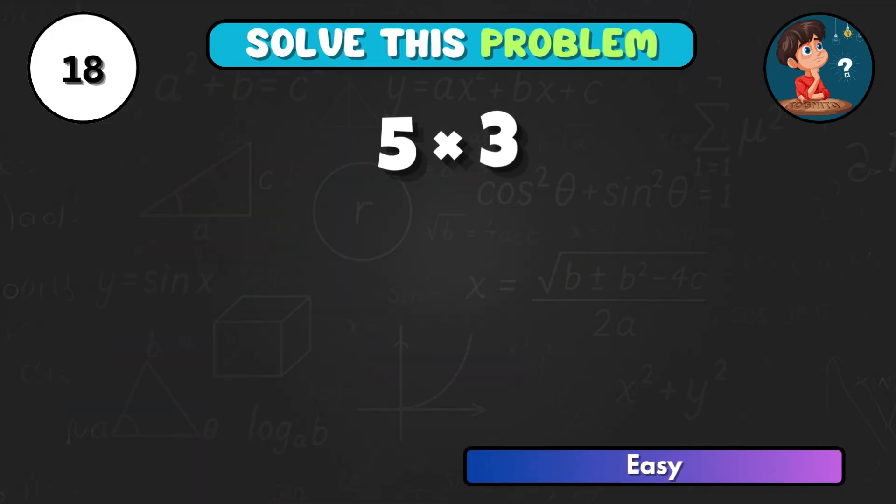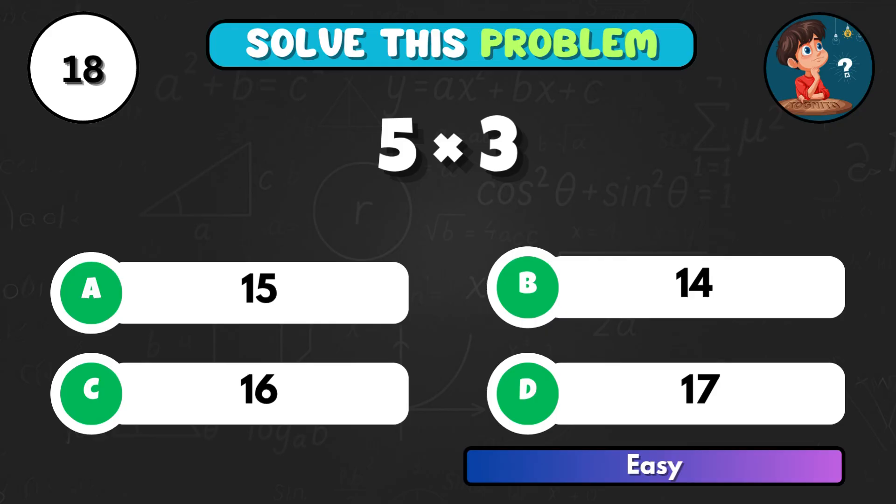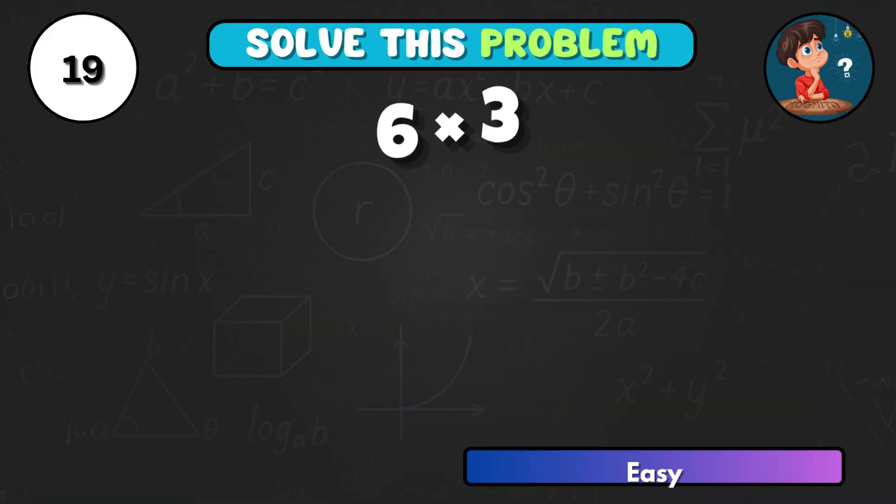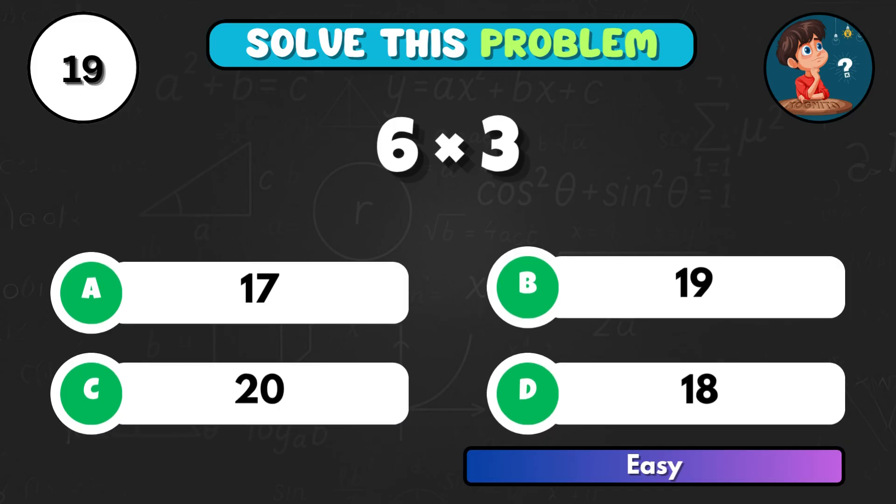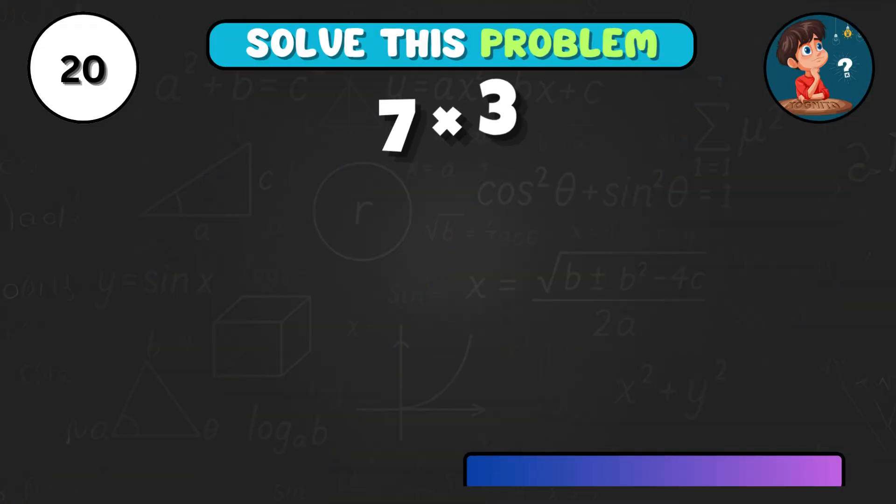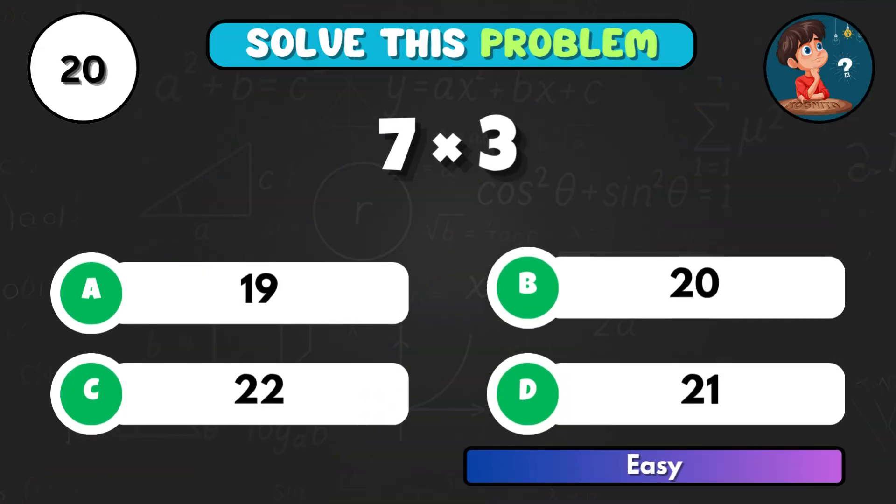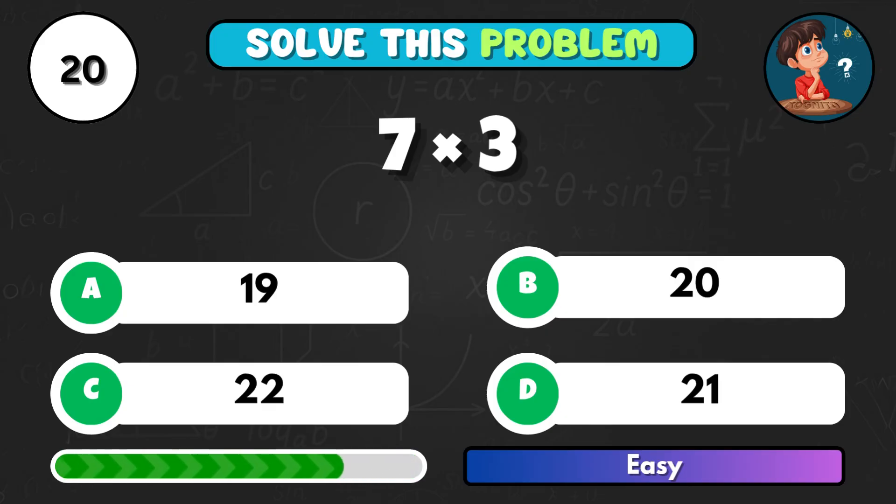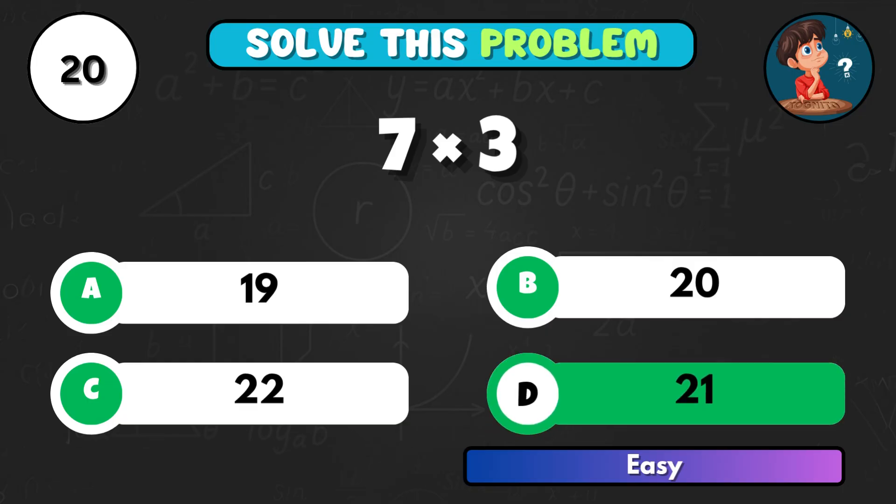5 times 3, what do you think? That's A, total 15. 6 multiplied by 3, how much is that? Option D and that equals 18. 7 times 3, what's your answer? Correct letter D equals 21.